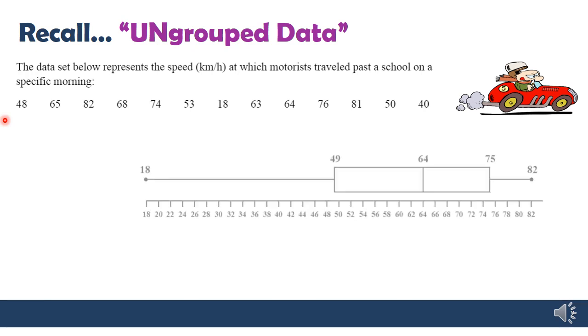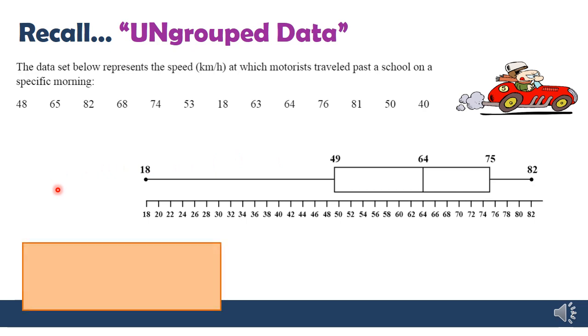Remember with ungrouped data we've talked about displaying it and looking at the distribution of the data in terms of a box and whisker plot. And you should feel very comfortable doing that. So when we talk about ungrouped data we're talking about the raw values and we're displaying them using box and whisker or we also talked about displaying them using a scatter plot.